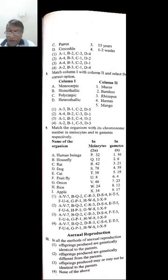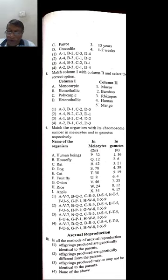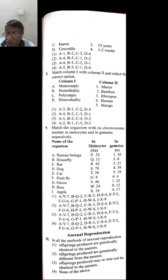For heterothallic, the thallus or mycelium of the fungi can be identified as male or female. Rhizopus is the example. The correct answer matches monocarpic–bamboo, homothallic–Mucor, polycarpic–mango, heterothallic–Rhizopus.